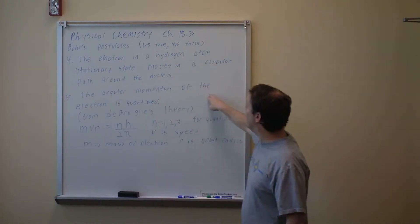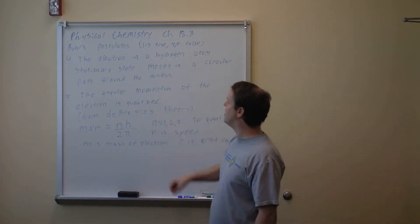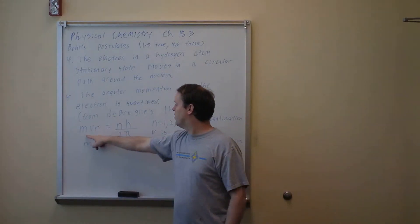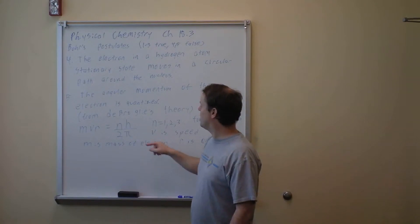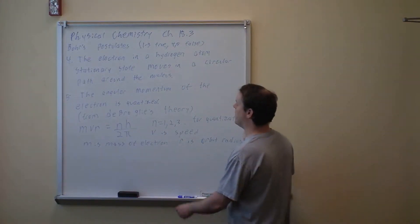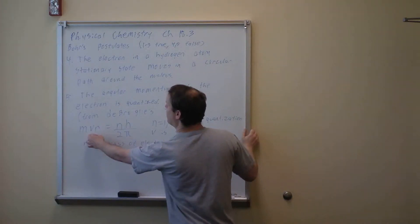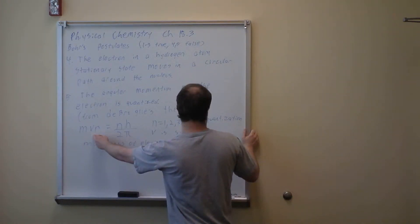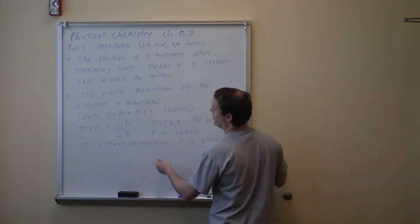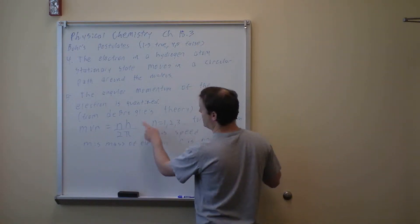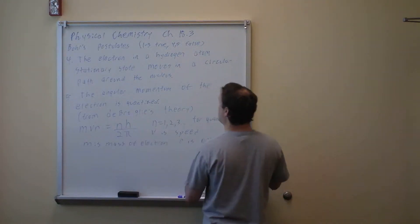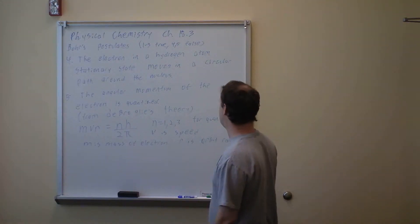Bohr's fifth postulate — also false — states that the angular momentum of the electron is quantized: mvr = nh/2π, where m is the mass of the electron, v is the speed, r is the radius of its orbit, h is Planck's constant, and n is any counting number 1, 2, 3, 4 for quantization.